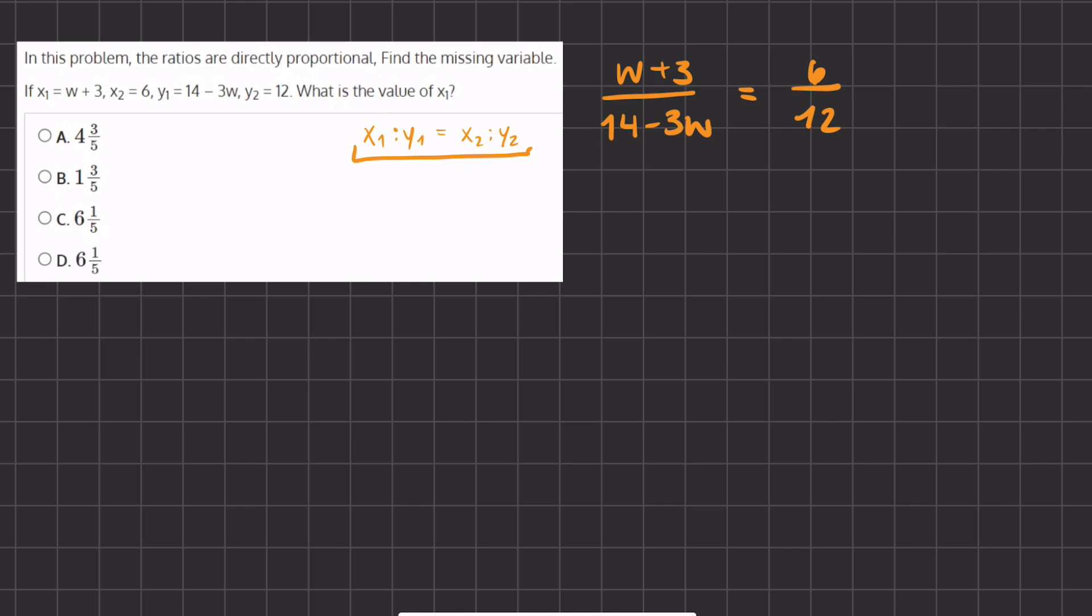Now let's simplify this expression. Our first fraction we cannot simplify, so we will rewrite it. w plus 3, divided by 14 minus 3w, equals half, because we can simplify the numerator and denominator by dividing by 6.